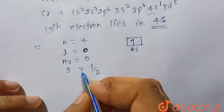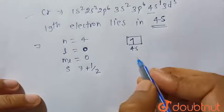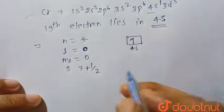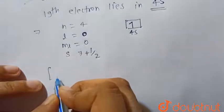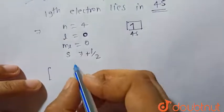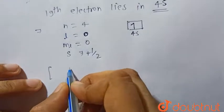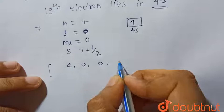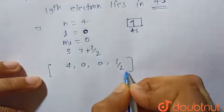So this is 4s orbital. If this is clockwise, since this is the first electron, we take s as positive, and for anticlockwise we take s = -½. So the set of quantum numbers for the 19th electron which lies in the 4s subshell is 4, 0, 0, +½.